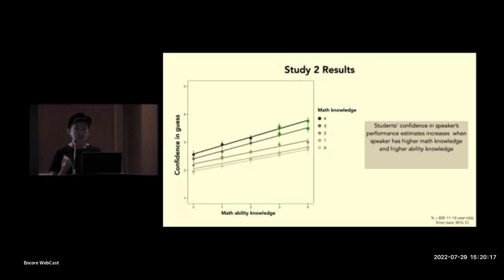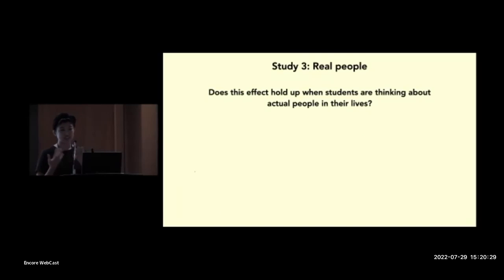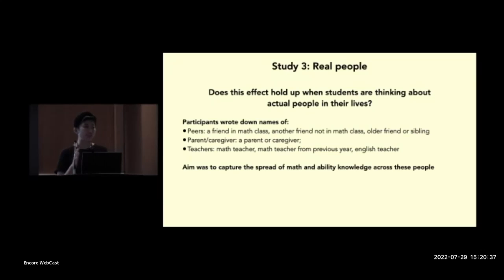Okay, so so far what we've tested is how students reason about hypothetical people. And in this final study, what we were interested in asking is, well, what about when students think about real people in their lives? Does this effect still hold up? And so in this third and final study, what we did is we asked participants to write down names of their peers, a friend in their math class, another friend outside of math, an older friend or sibling if they had one. We asked them to think about their parent and also a few different teachers. And our goal in asking about these different people was to capture the spread of math knowledge and ability knowledge across them.